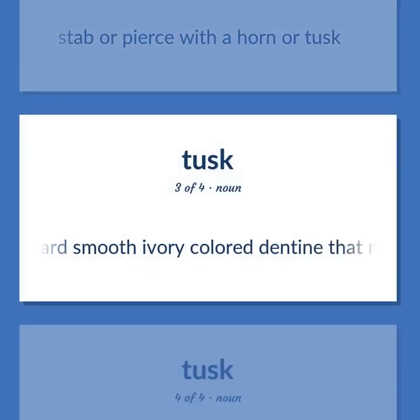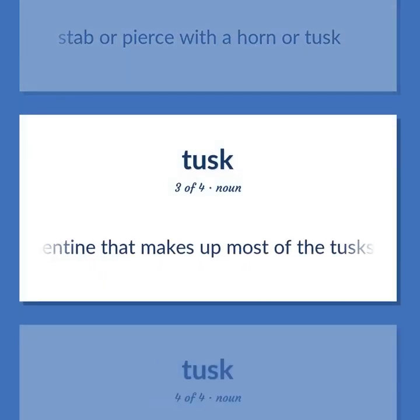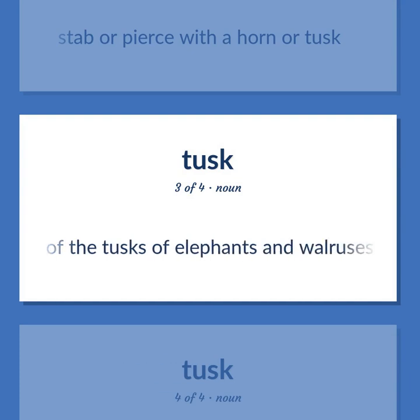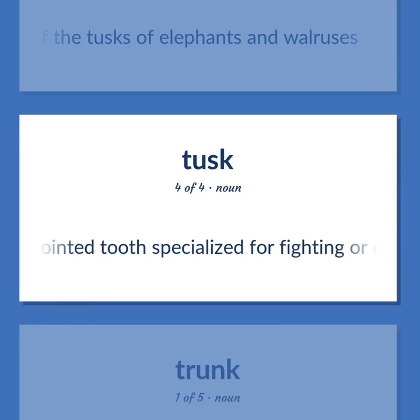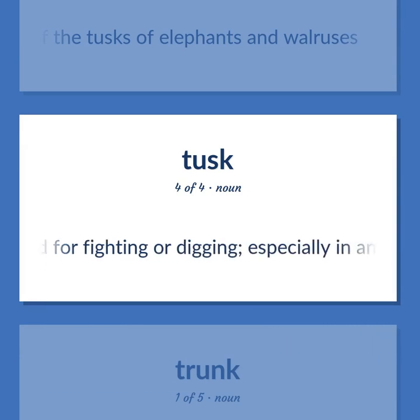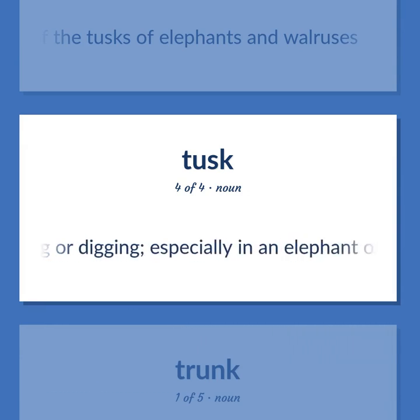A hard smooth ivory-colored dentine that makes up most of the tusks of elephants and walruses. A long pointed tooth specialized for fighting or digging, especially in an elephant, walrus, or hog.